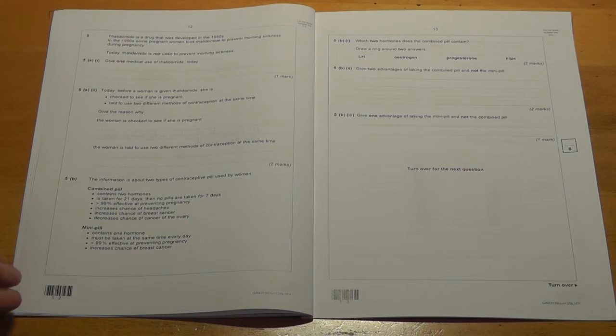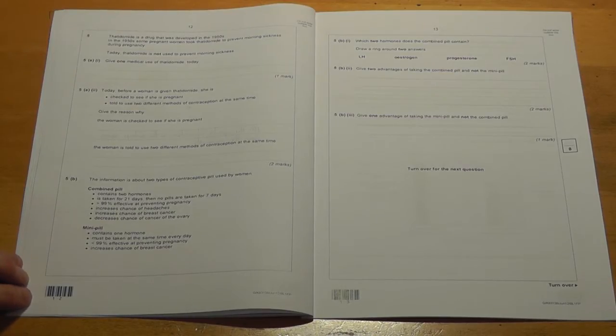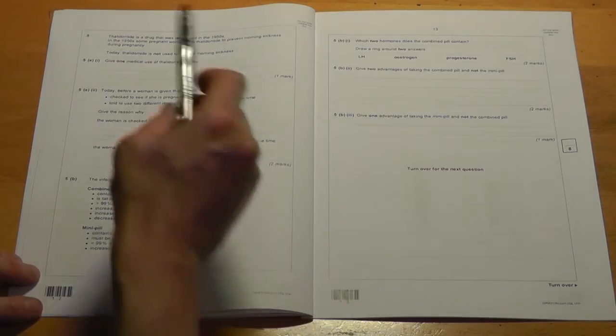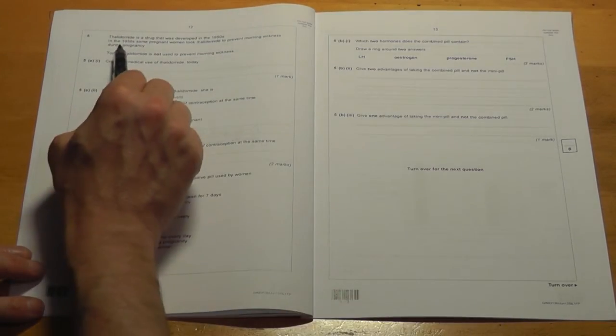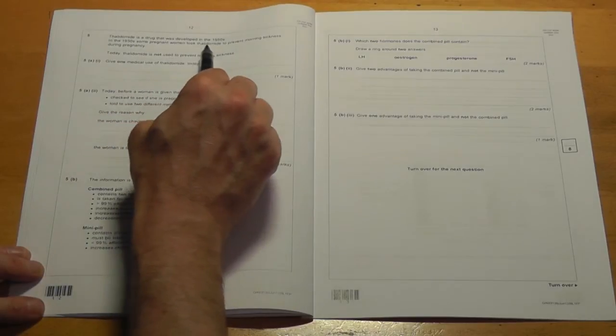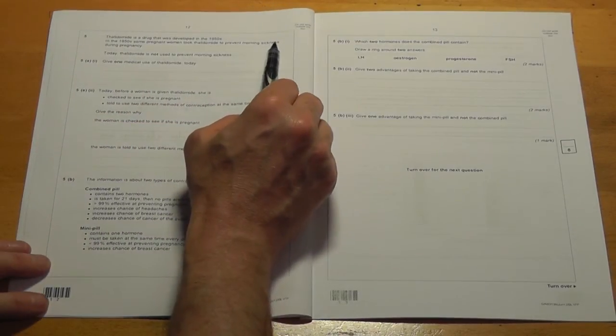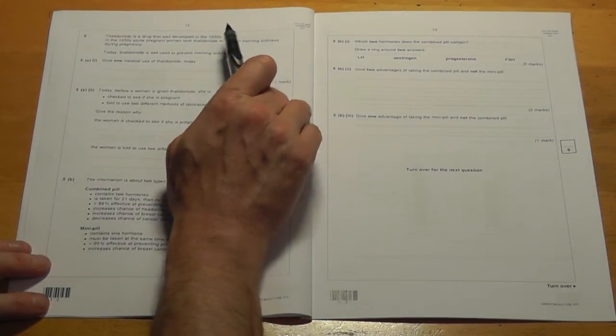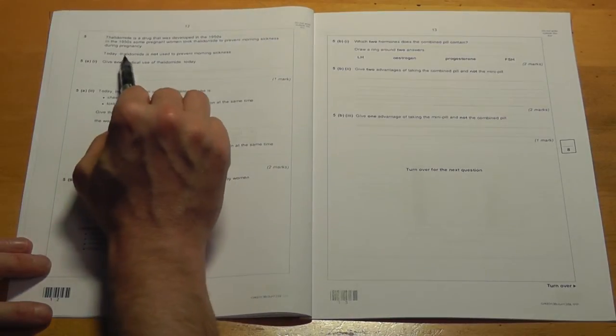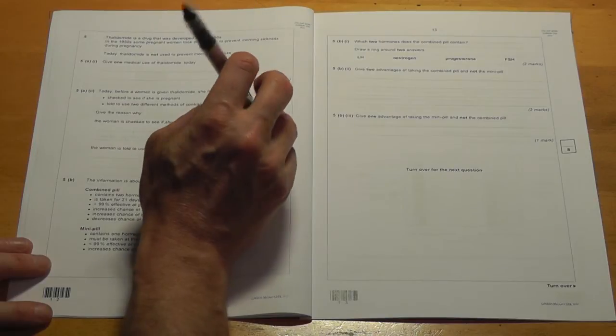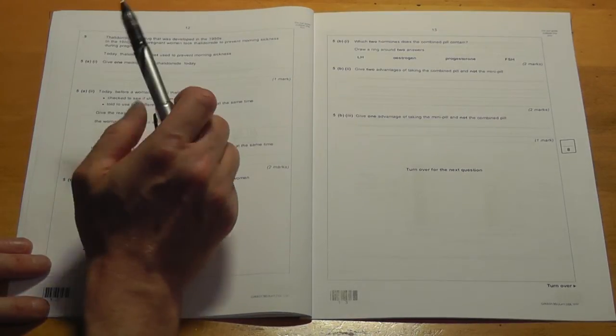Okay, this is June 2012, Biology B1 Foundation paper, Question 5. It's a question about Thalidomide, a drug that was dealt in the 1950s. In the 1950s some pregnant women took Thalidomide to prevent morning sickness during pregnancy. That's when women who are pregnant feel sick, particularly in the mornings. Today it's not used to prevent morning sickness. Give one medical use of Thalidomide today.